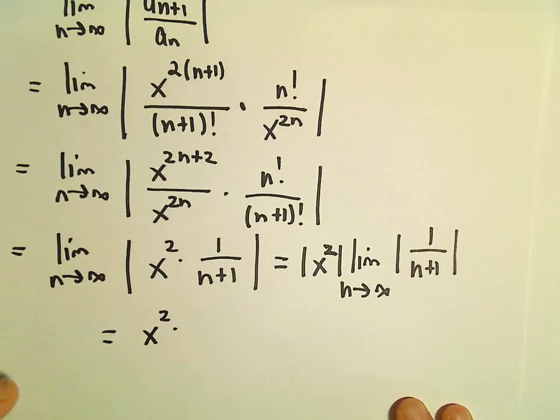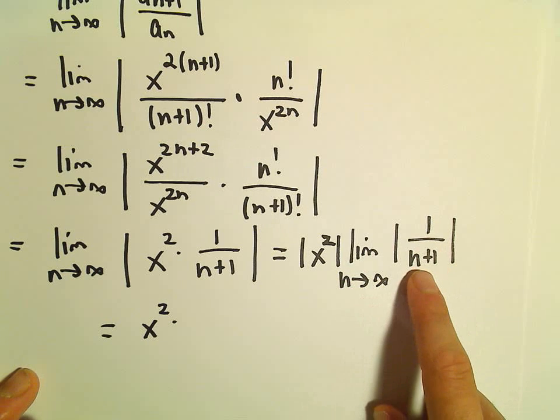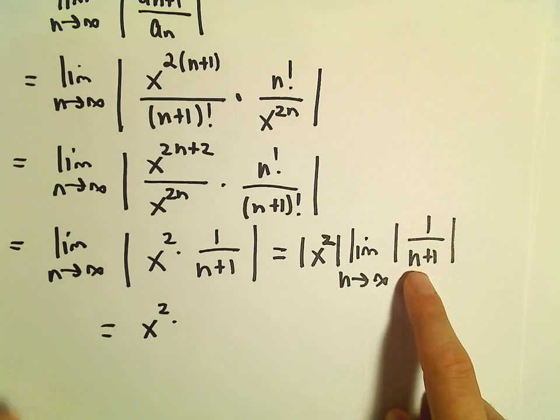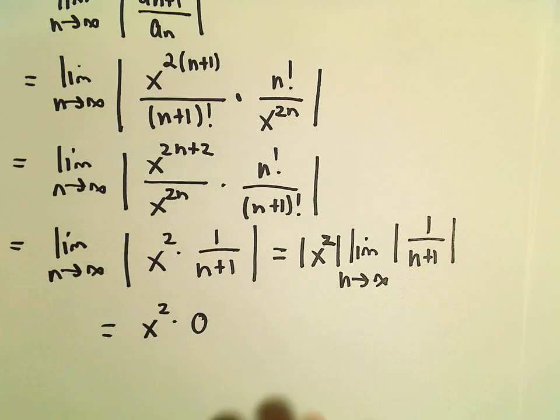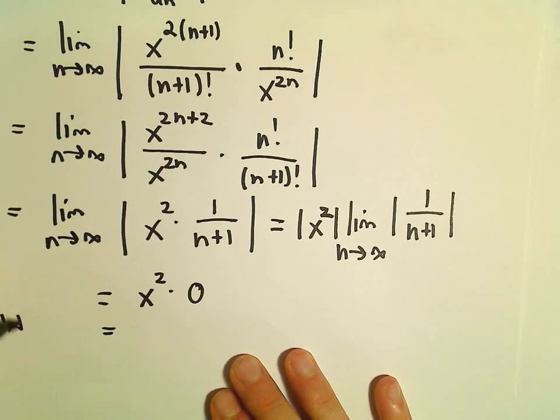Well, this is going to leave us with x squared times, well let's see, the limit as n goes to infinity of 1 over n plus 1. That's going to be 1 over a large number, which is 0. Well, and recall what we want.